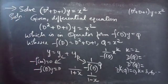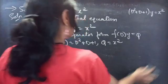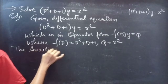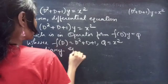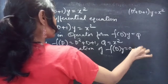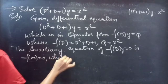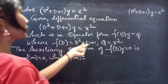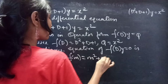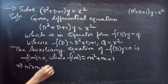Firstly we are going to find yc using the auxiliary equation of the homogeneous equation of the given non-homogeneous equation. The auxiliary equation of f(D)·y = 0 is f(m) = 0, where f(m) is obtained by replacing the differential operator D with m. We have f(D) = D² + D + 1, so replacing D with m gives f(m) = m² + m + 1. Our auxiliary equation becomes m² + m + 1 = 0.